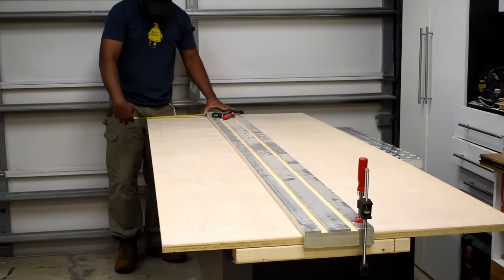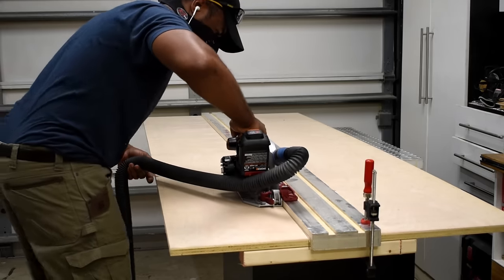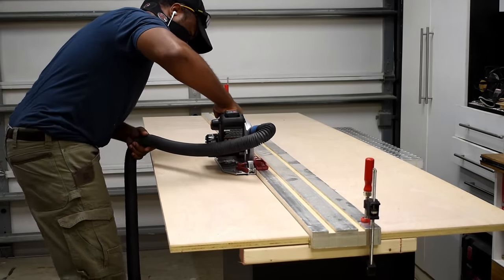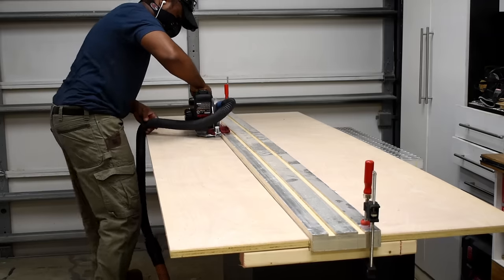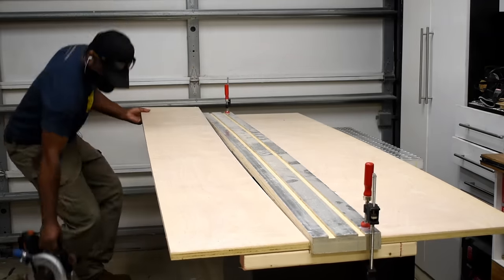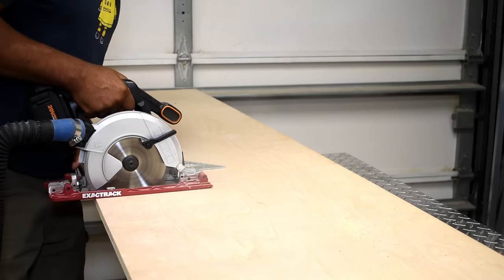I'm going to get started by ripping down a sheet of plywood. One tip I always like to share is when you're cutting plywood, one good thing to do is put some support on the back end. That way when you make the rip all the way through, it should prevent the plywood from falling.